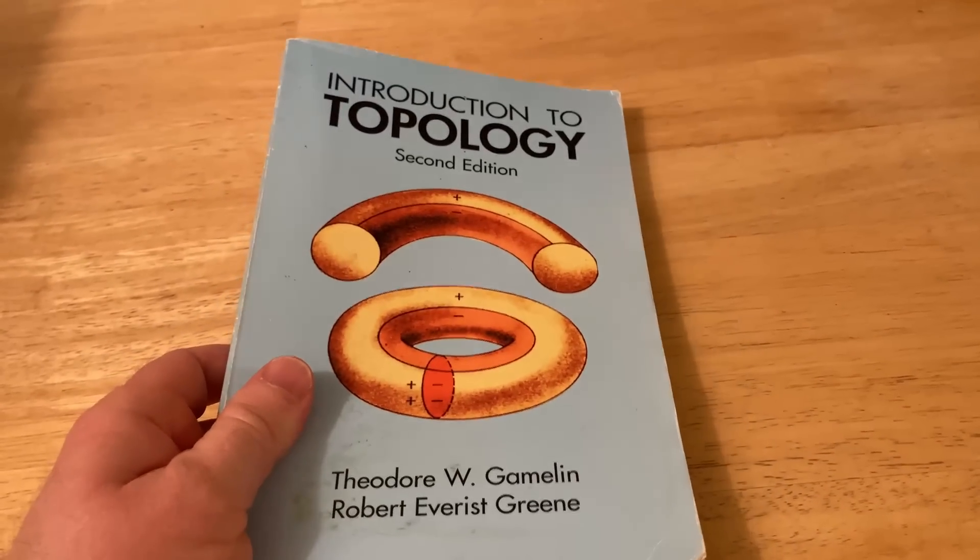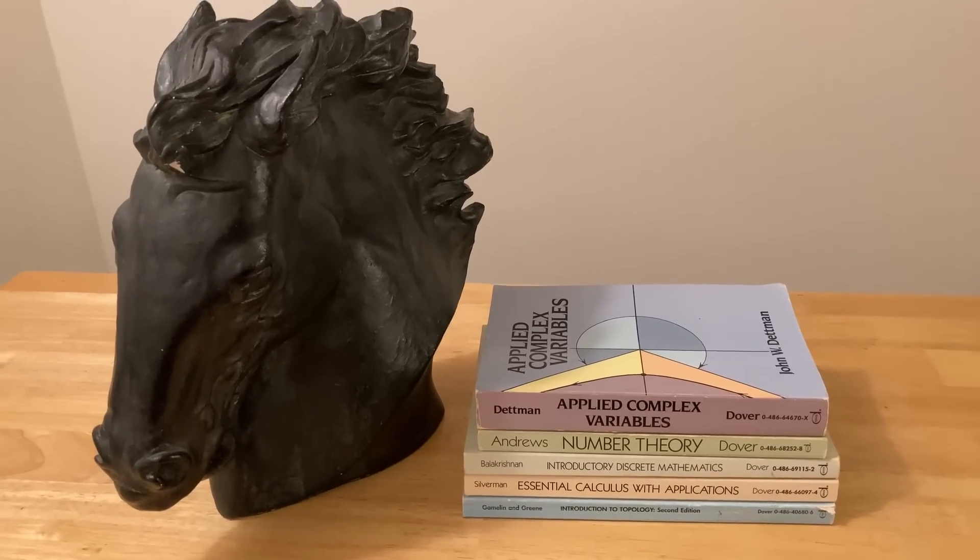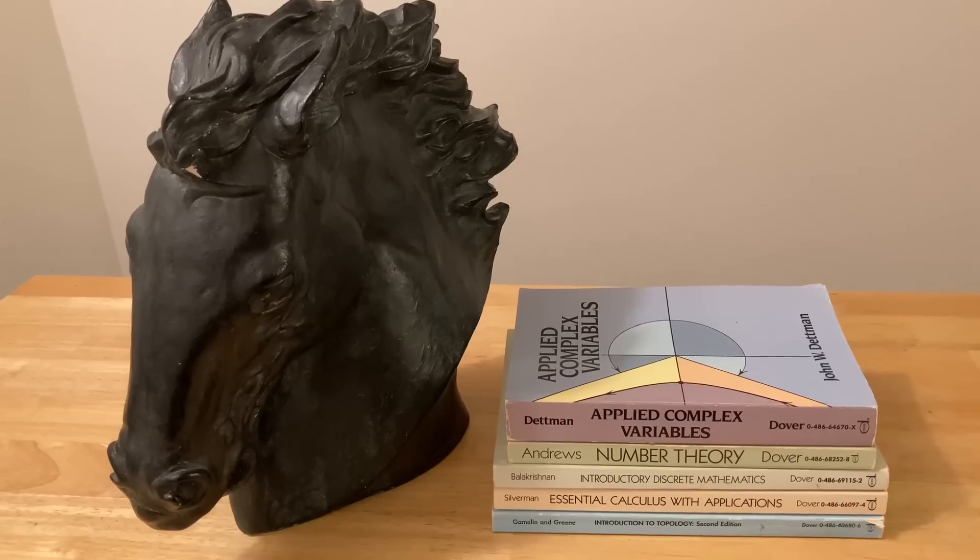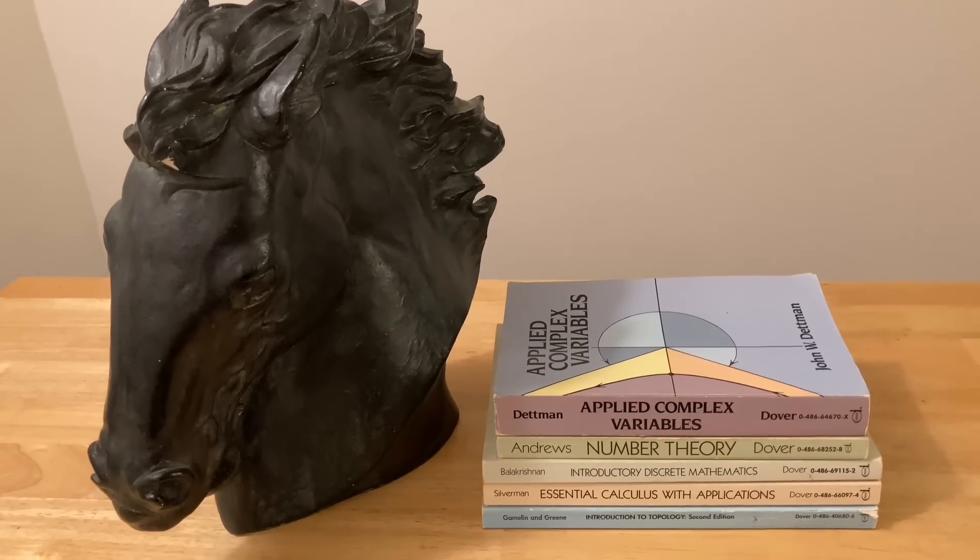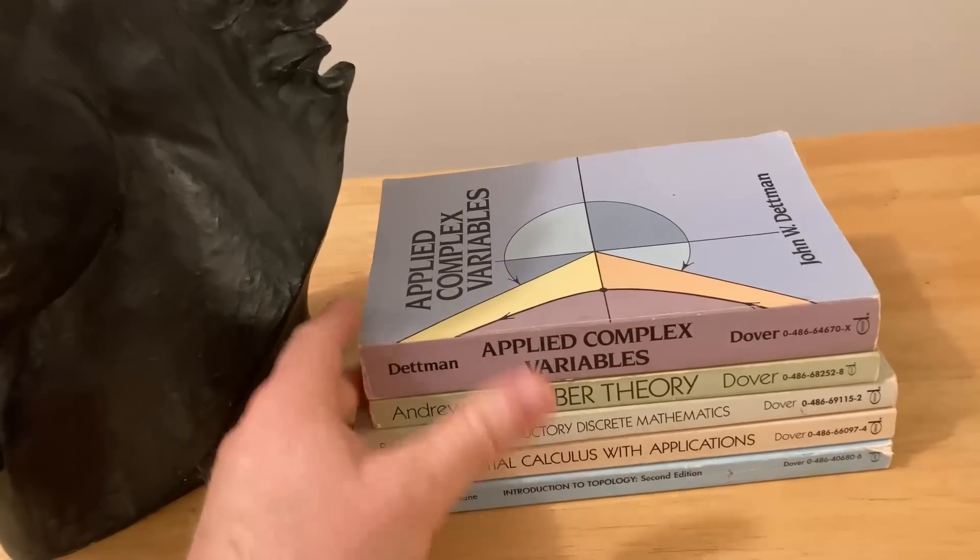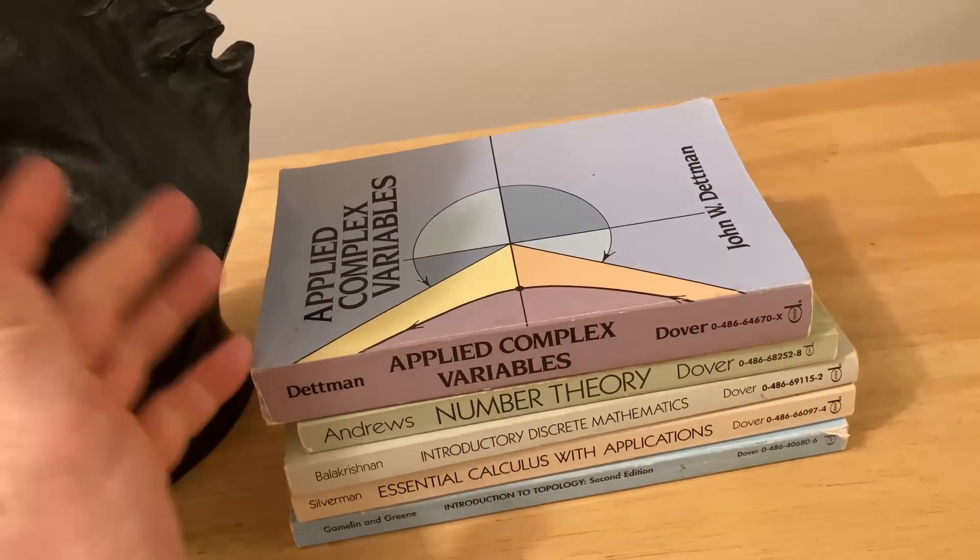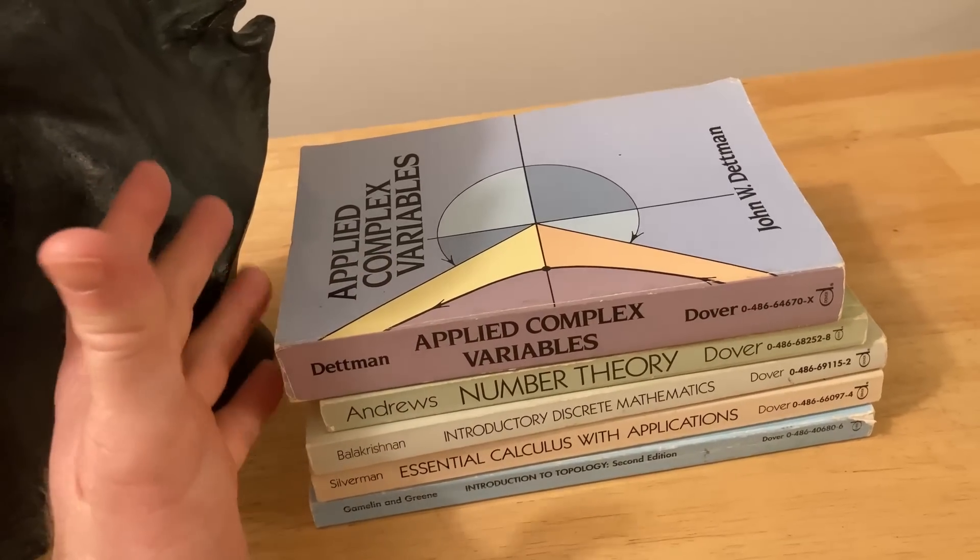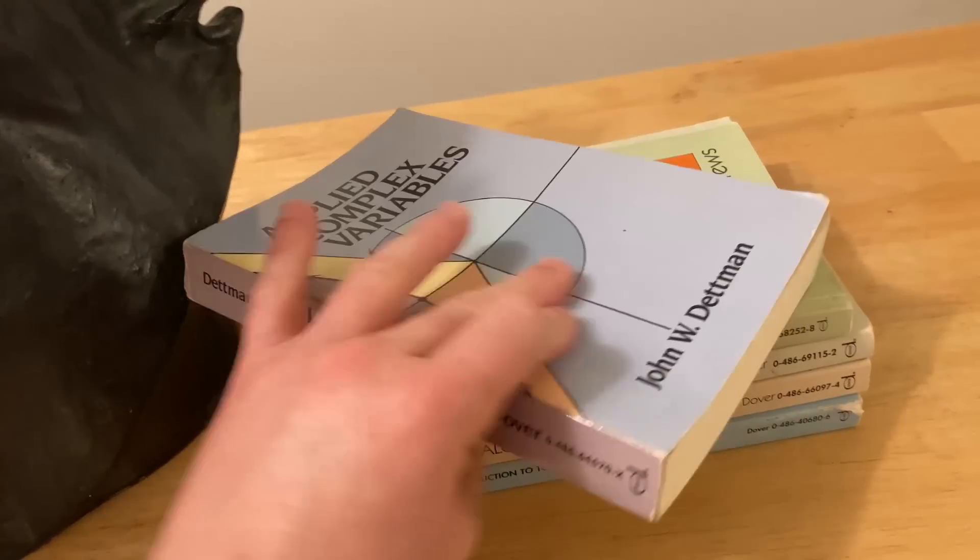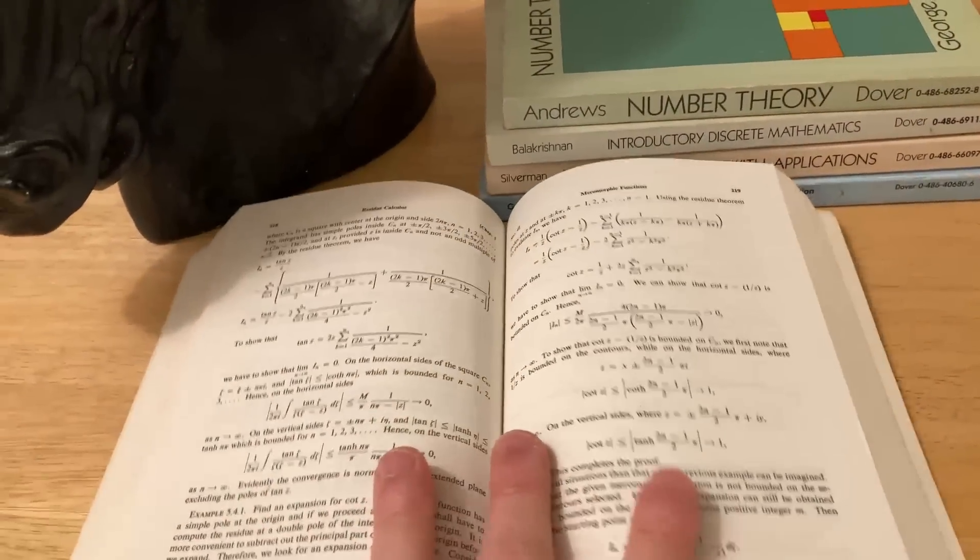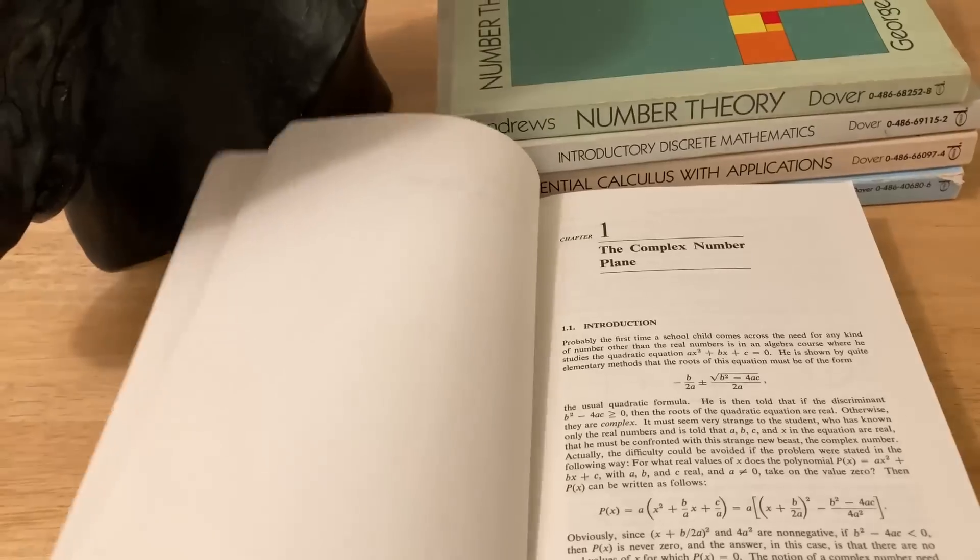So those are five books that I have that I think are really good. They're all Dover books, that means they're all really affordable, and I'll try to leave links in the description in case you want to pick some up. I really like the size of all of these books, they're really easy to pick up and take with you when you're on the go, they're affordable. Really nothing negative to say about them, except that sometimes depending on the book they don't really lay flat.